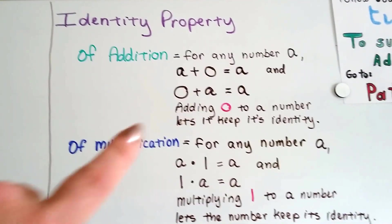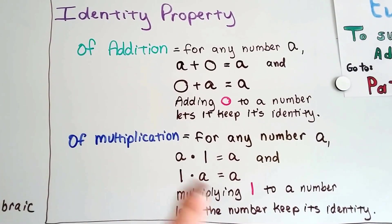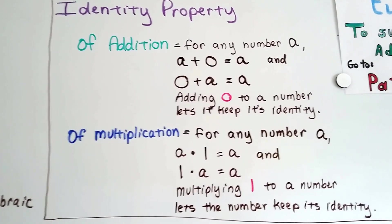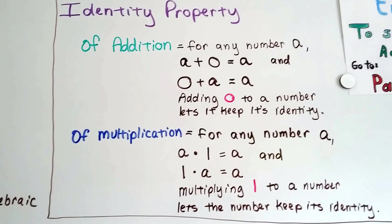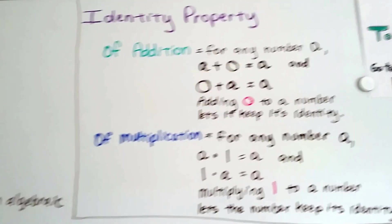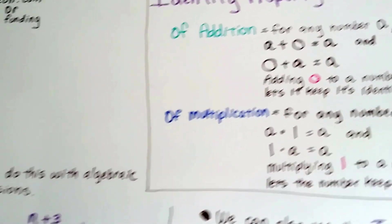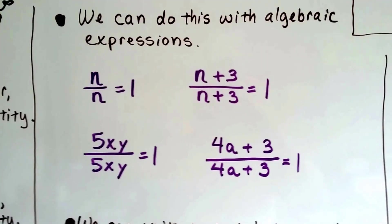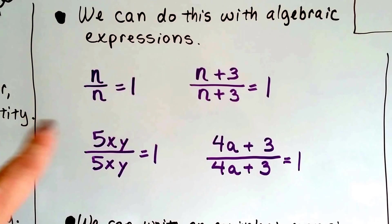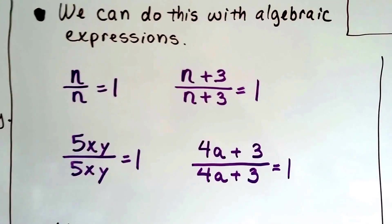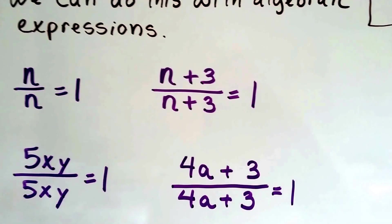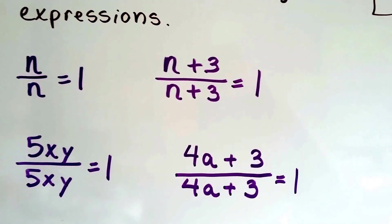So you notice in the addition property there's a 0, and in the multiplication property there's a 1. Multiplying 1 to a number lets the number keep its identity. And we can do this with algebraic expressions. If we have n over n, that's going to equal 1. And if we have n plus 3 over n plus 3, that's going to equal 1.